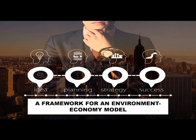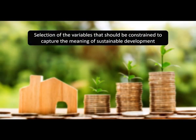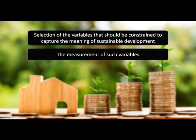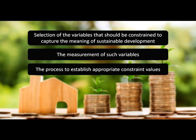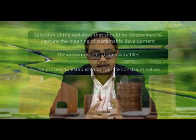If we look into a framework for an environmental model, from a modeling perspective, the concept of limits to human activities should be introduced through a set of constraints expressed mathematically. Certain problems exist: first, the selection of the variables that should be constrained to capture the meaning of sustainable development; second, measuring such variables; and third, the process to establish appropriate constraint values. The main challenge is to specify a set of constraints that are comprehensive and measurable without becoming too detailed.